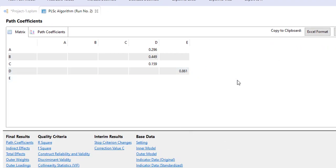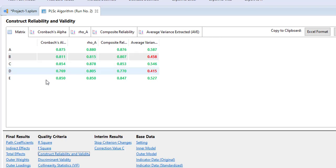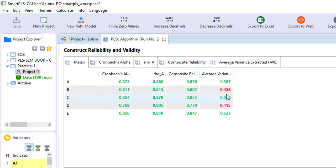So the measurement model is estimated. As you can see at the bottom of the page there are certain links given. You can see construct reliability and validity, discriminant validity. If you go to construct reliability you can see there are certain values which are in green and there are certain values which are in red.